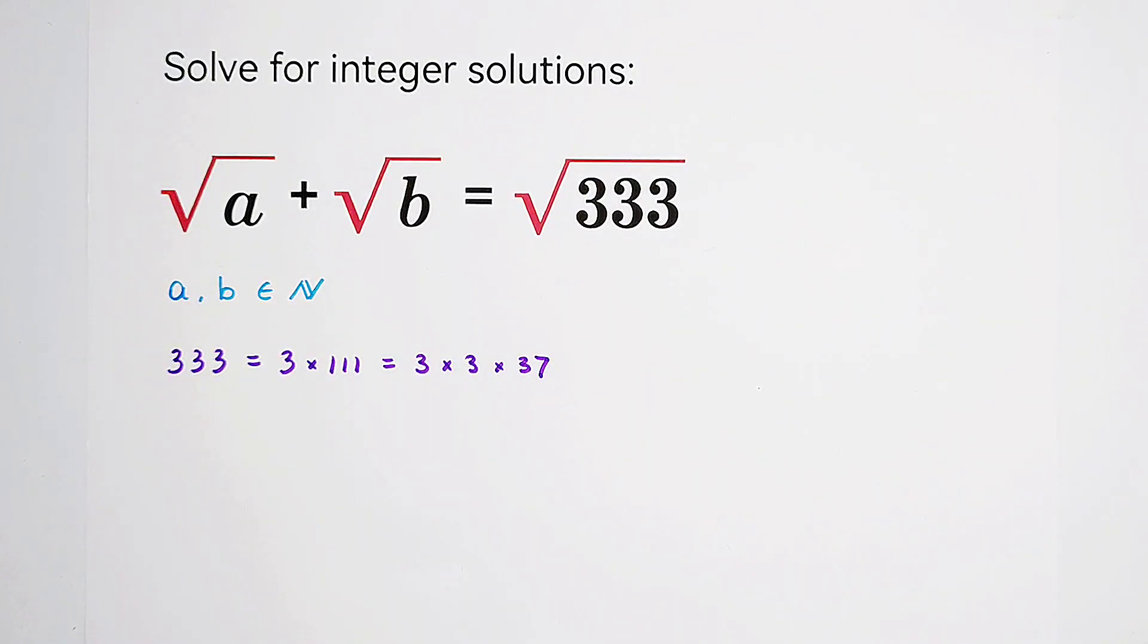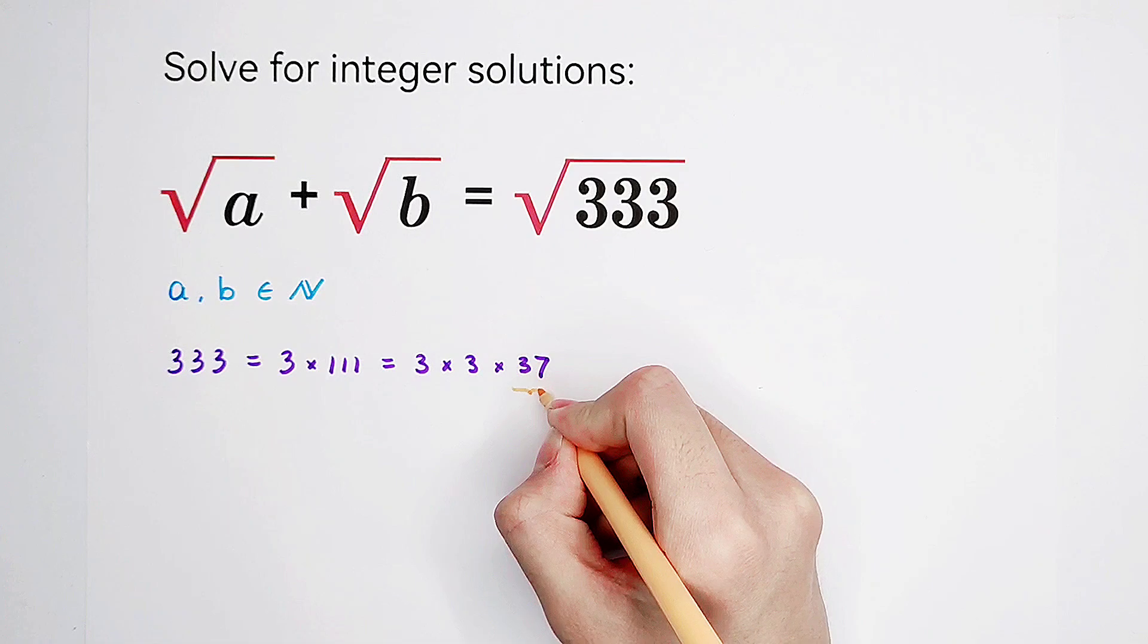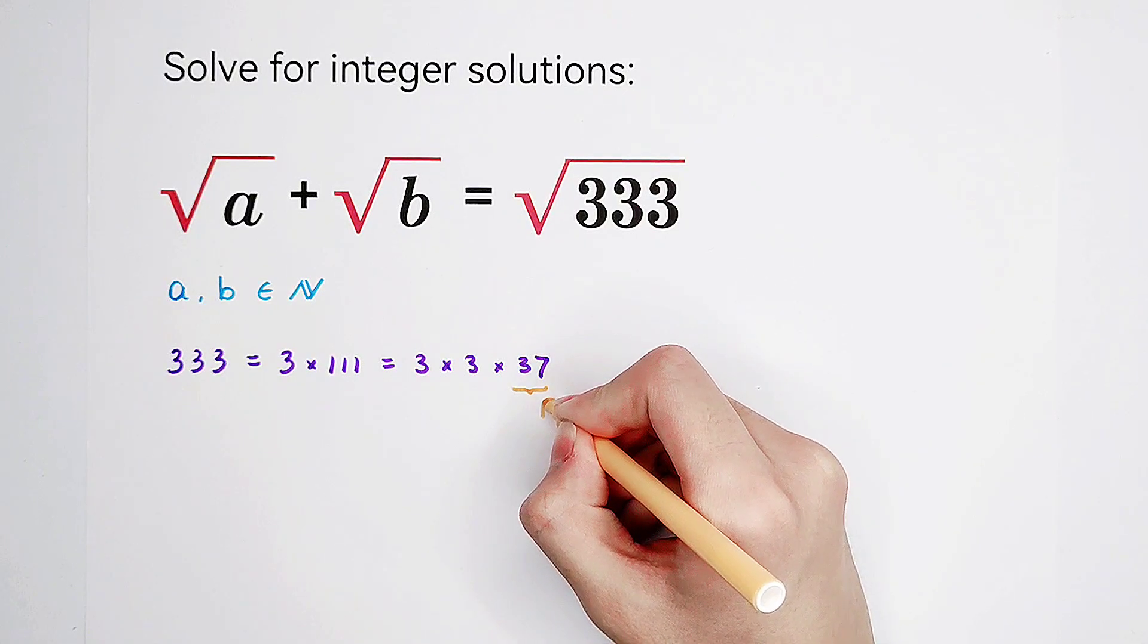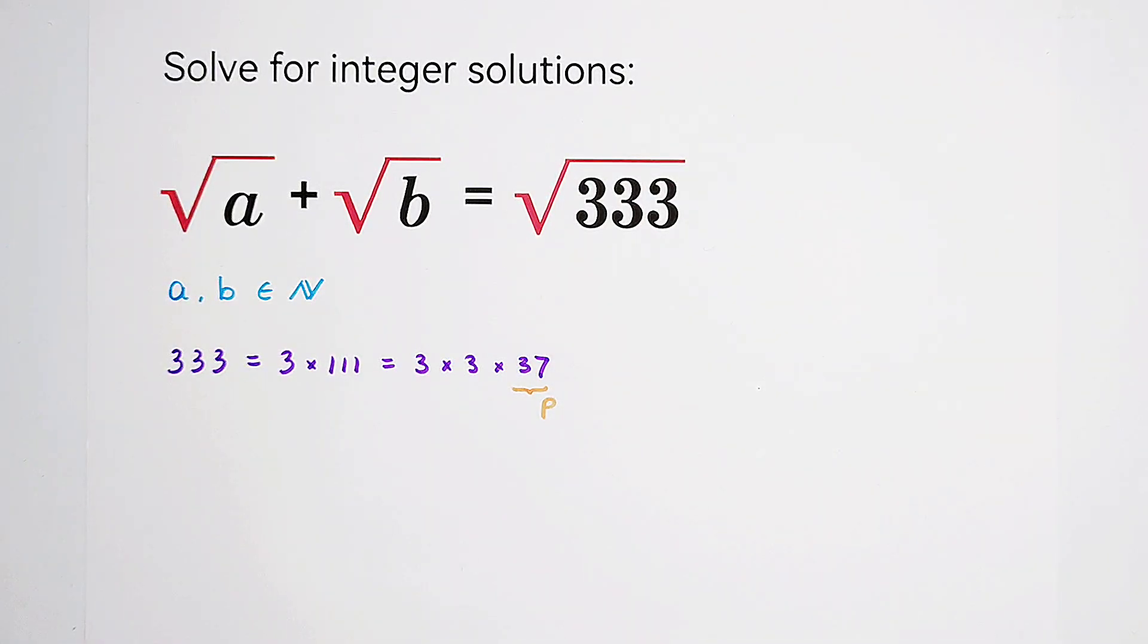And now, 37 is a very lucky number. Why? Because it's prime. It is prime.